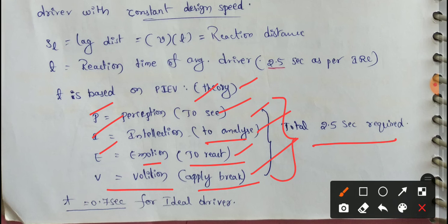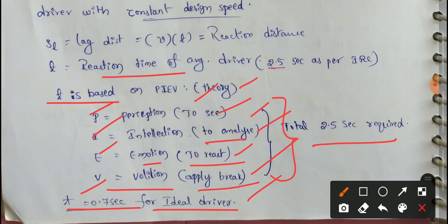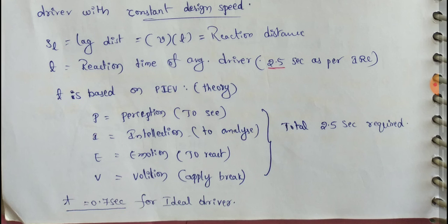We apply 2.5 seconds as per IRC. The ideal driver's reaction time T is 0.7 seconds, but that is only ideal — practically, 2.5 seconds is applied. T means reaction time.